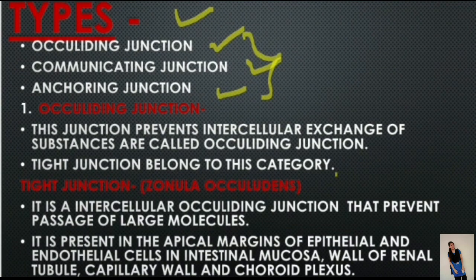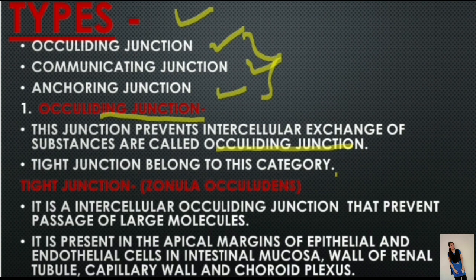Occluding junctions are those junctions that prevent intercellular exchange of substances. These junctions prevent the movement of ions and molecules from one cell to another cell. Tight junction belongs to this category.